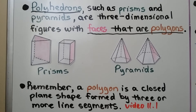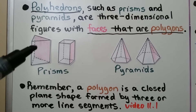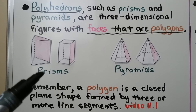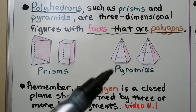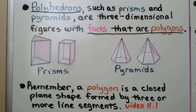Polyhedrons, such as prisms and pyramids, are three-dimensional figures with faces that are polygons. The sides are the lateral faces. Remember, a polygon is a closed plane shape formed by three or more line segments. We learned about that in video 11.1, which is linked in the description.